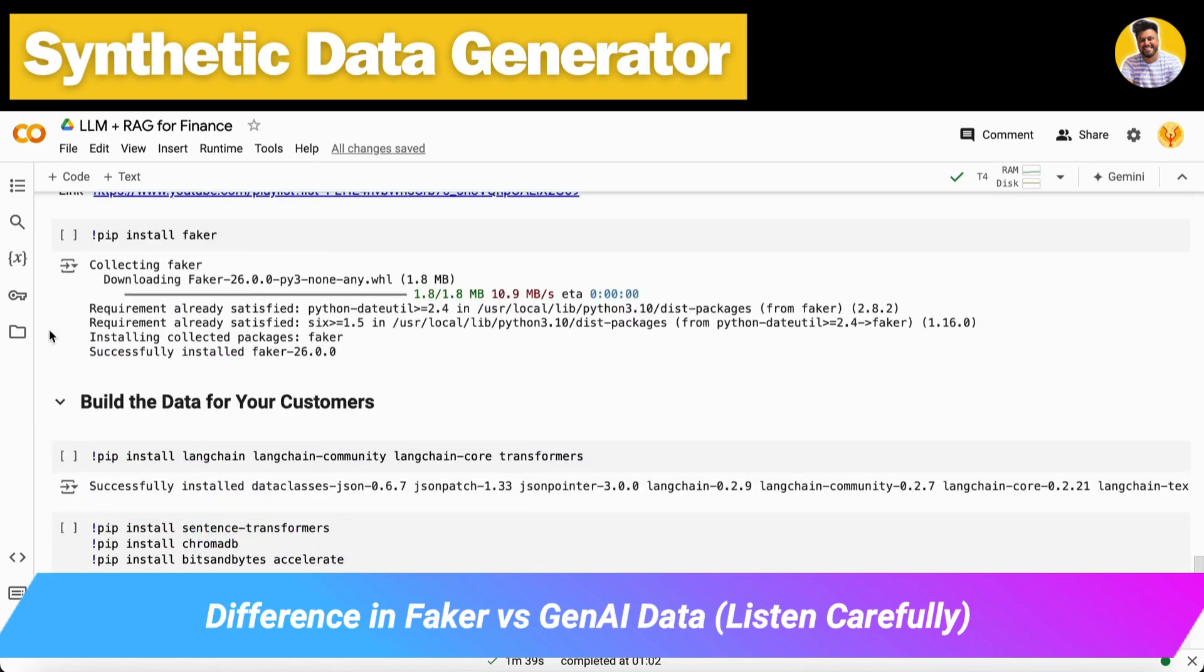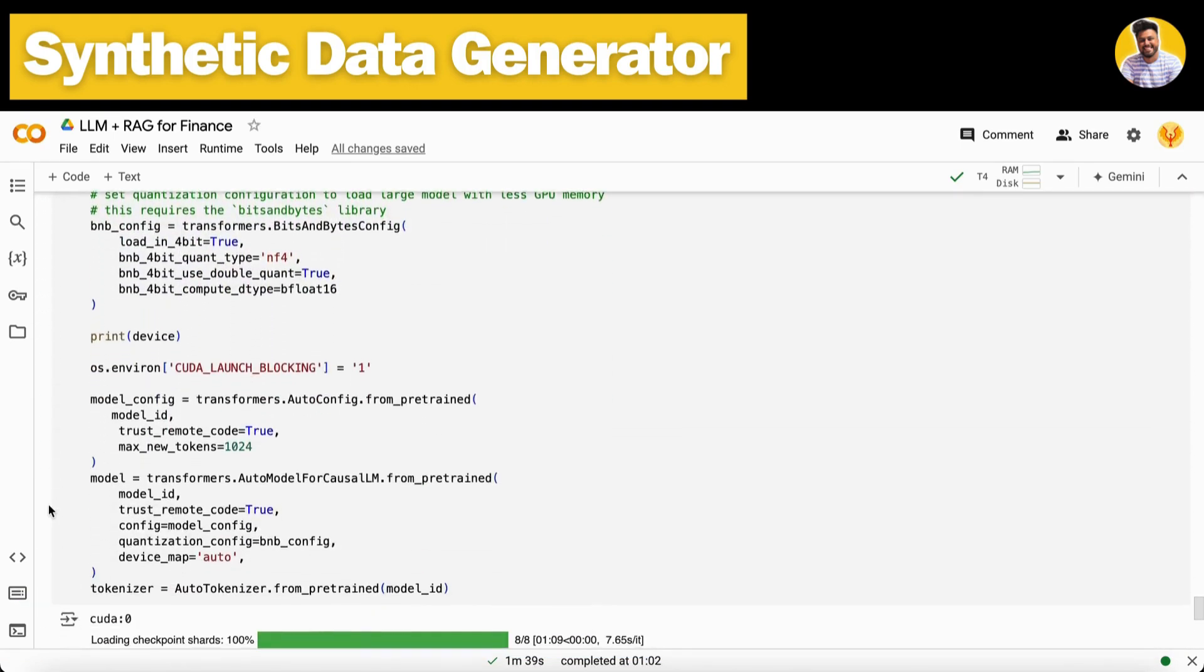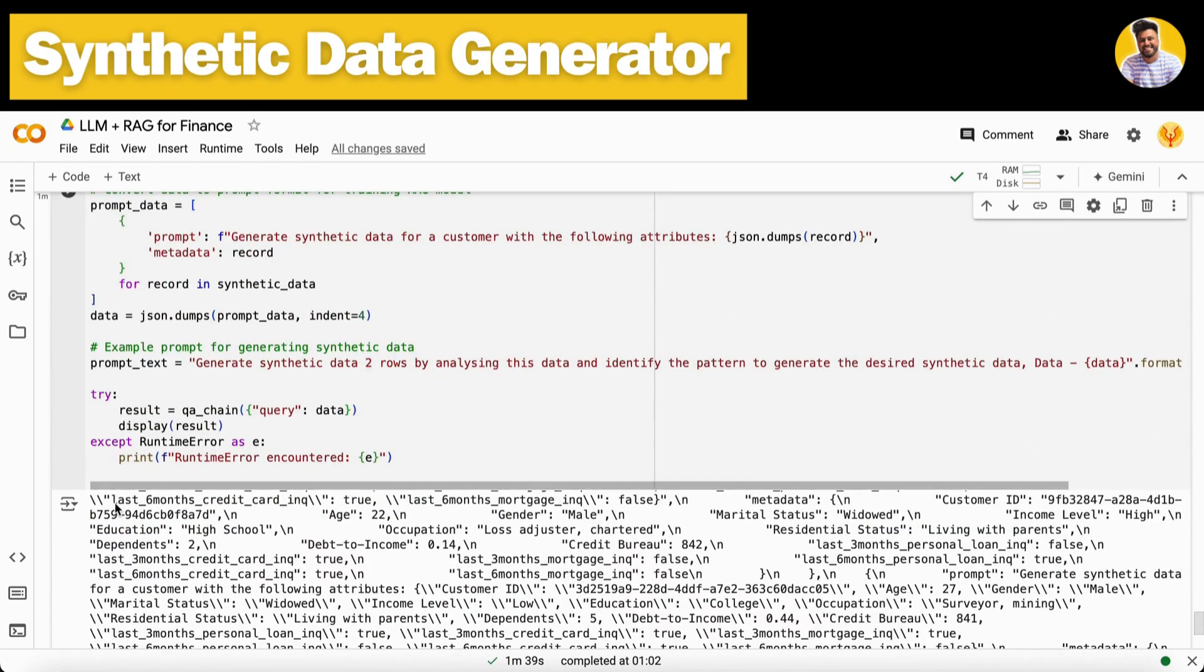The difference between this generated data and the data I generated above with the Faker library is that the Faker library will not mimic the pattern of your own data, but with the help of Gen AI you can make that data exactly look like or have patterns similar to actual real-world customer behavior.